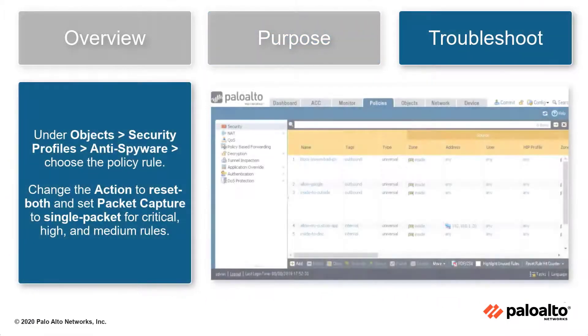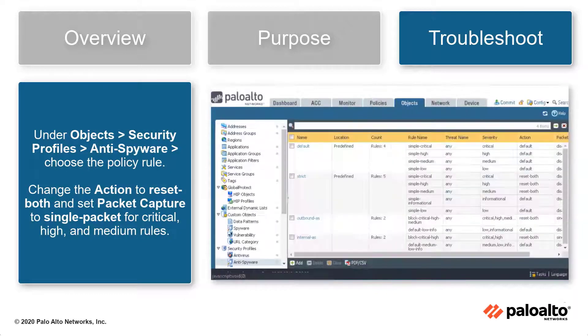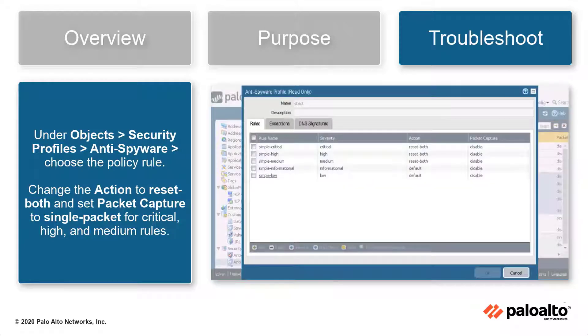Under security profiles, anti-spyware, choose policy rule. Change the action to reset both and set packet capture to single packet for critical, high, and medium rules.